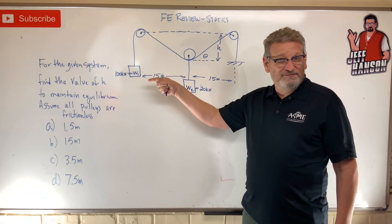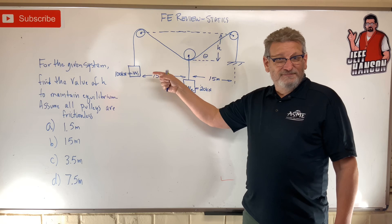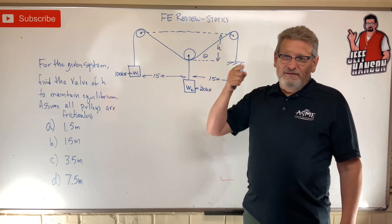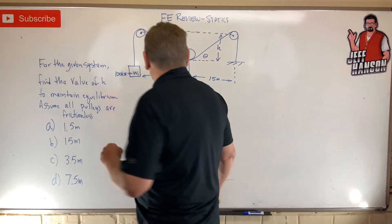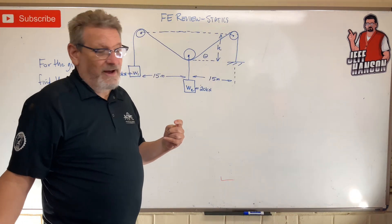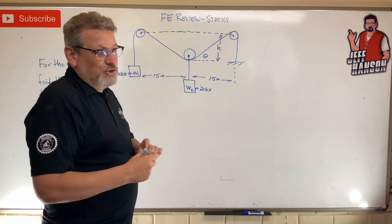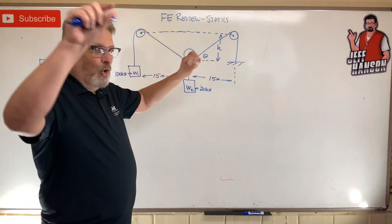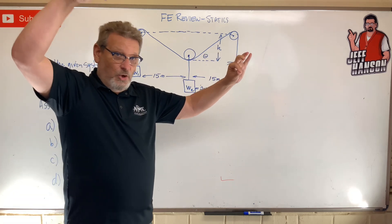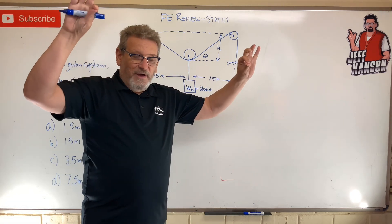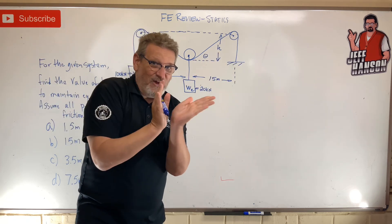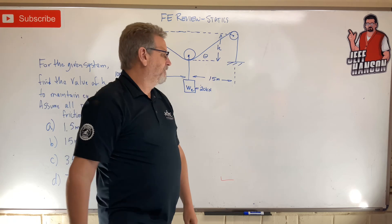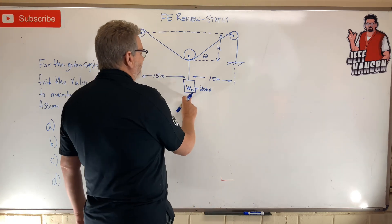Back — number one thing: it's a statics problem, so start off with drawing a free body diagram. One thing you should always know about a pulley on ropes: if I have a rope and a pulley and I let it go, that rope is always going to settle right in the middle, and the angle on each side of that pulley is always going to be the same.